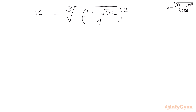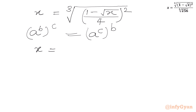Now I will use the exponent law: (a^b)^c can be written as (a^c)^b. Applying this, x equals the cube root of (1 minus square root x over 4), that whole expression squared.